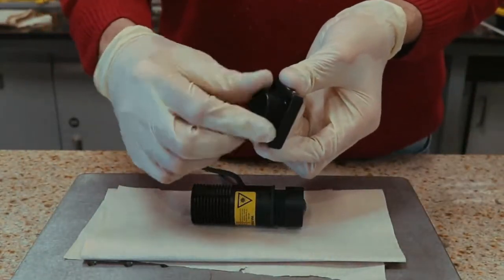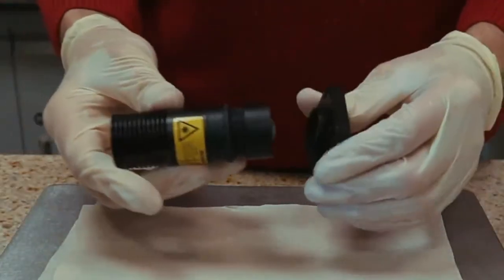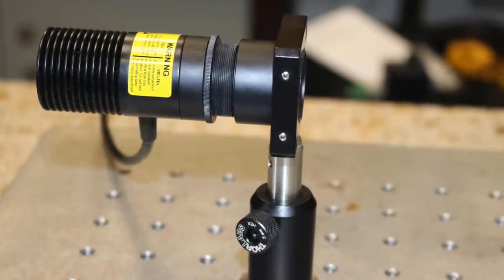Mount the LED on a cage plate and insert cage rods in this plate. At this point, you can mount the system on a post and post holder by attaching it to the cage plate for easier manipulation.